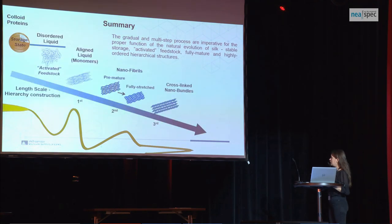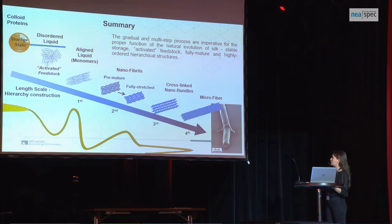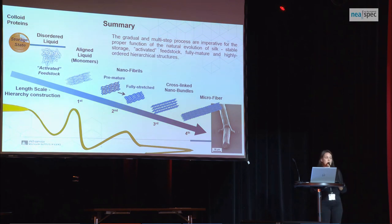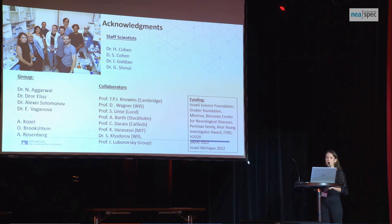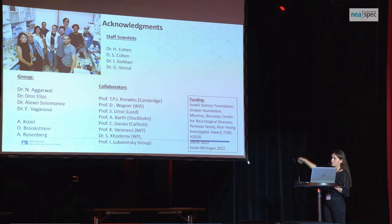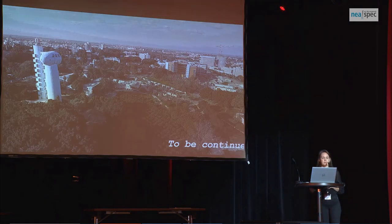In summary, silk formation involves a multi-step phenomenon from phase separation to phase transition, through alignment of nanofibrils and finally spinning. These phenomena are likely relevant for other protein components and also for amyloids, especially liquid-liquid phase separation. I would like to acknowledge collaborators: Professor Andreas Barth and his postdoc Paul Schumann, Dr. Sidney Cohen, group members especially Drora Elias who performed this work, and the funding sources. Thank you.